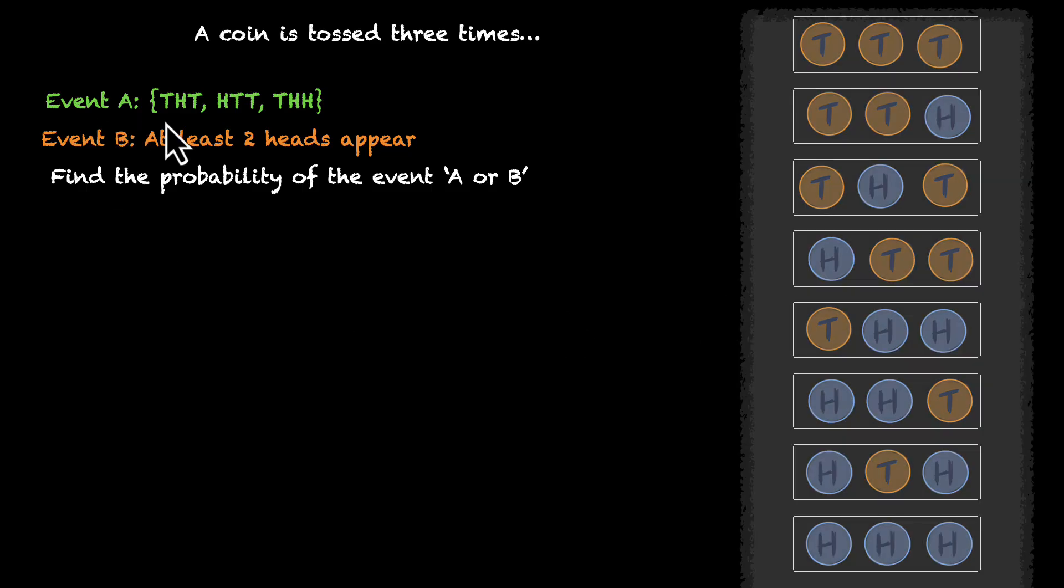We have this sample space. We have these eight equally likely outcomes. Let's look at event A. We have tail head tail, head tail tail, and tail head head.